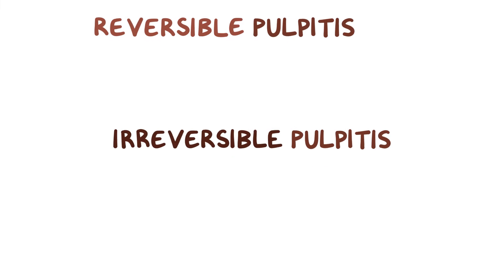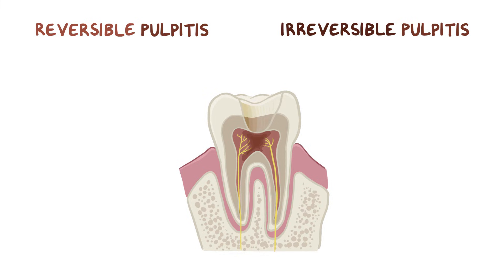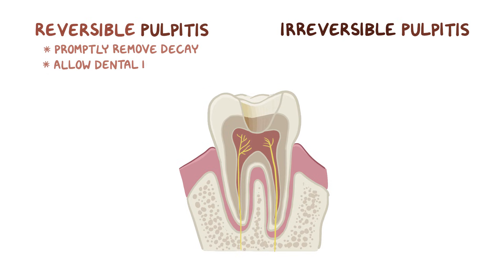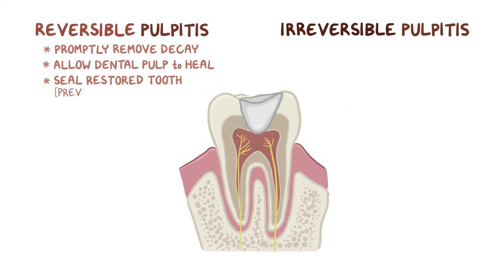In reversible pulpitis, it's important to promptly remove the decay and then place a restoration to help stop the process and allow the dental pulp to return to a healthy state. It's also important to seal the restored tooth so that it doesn't get reinfected.